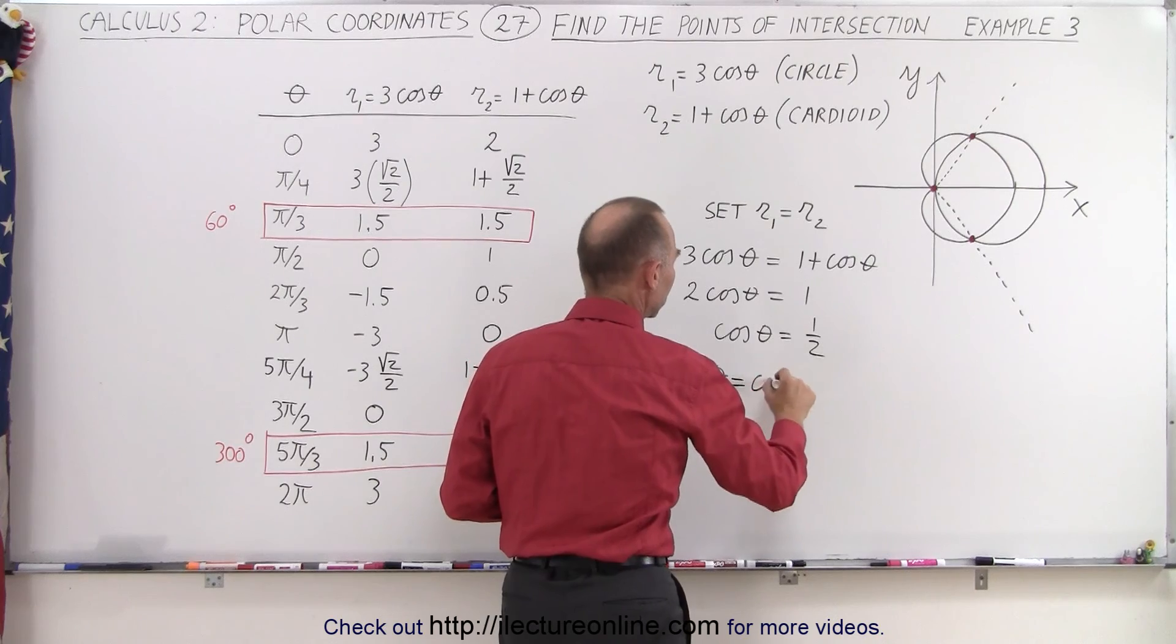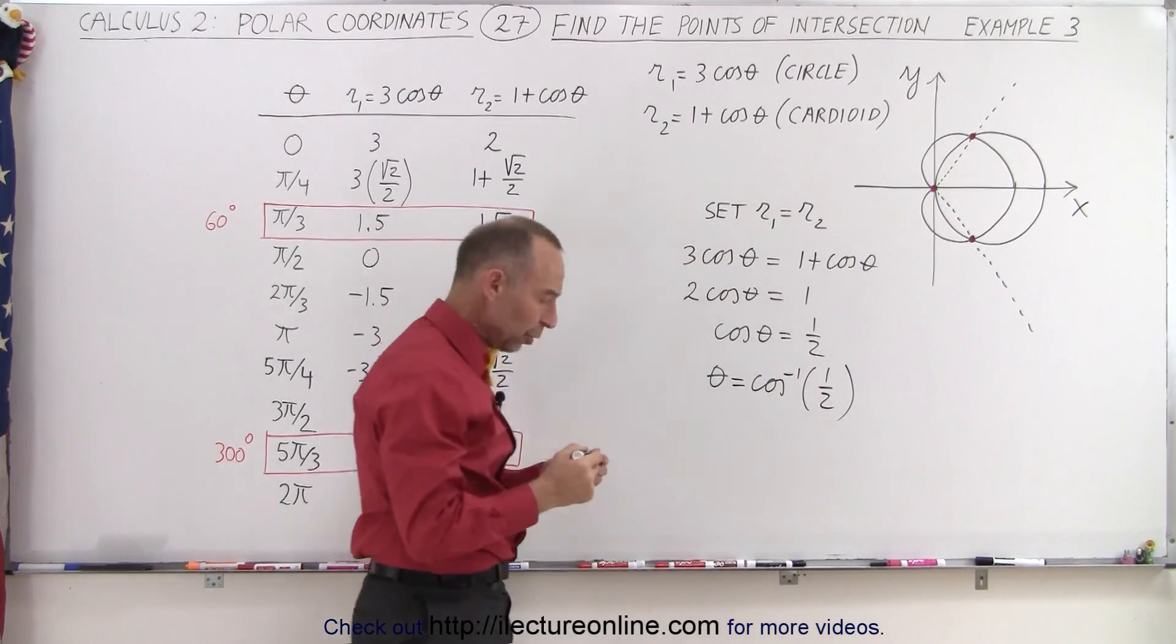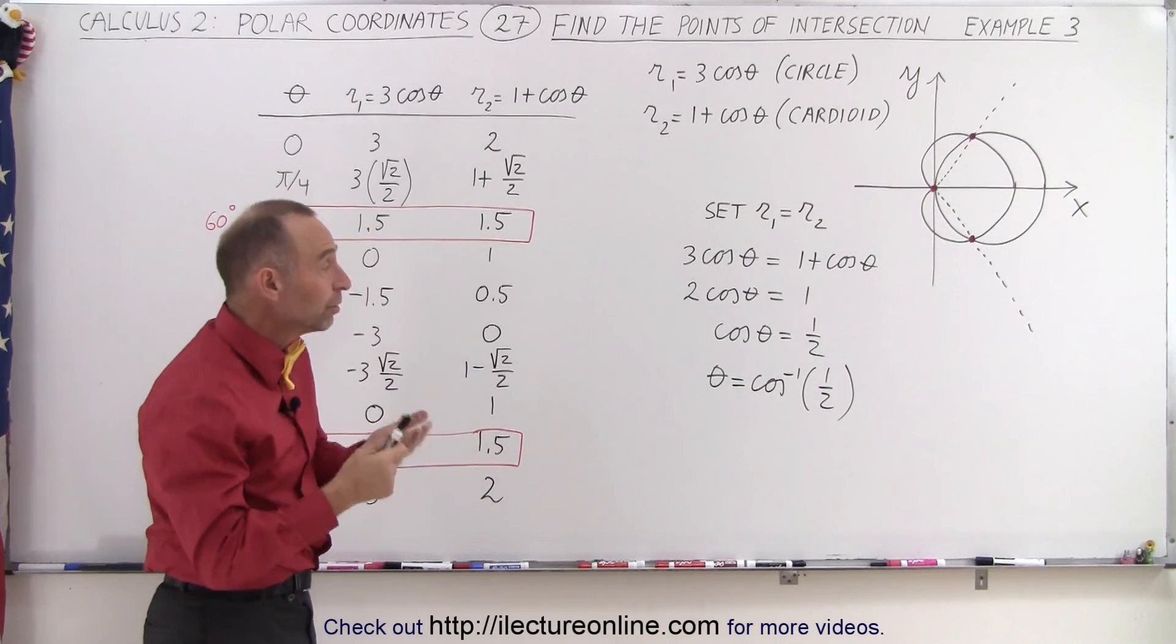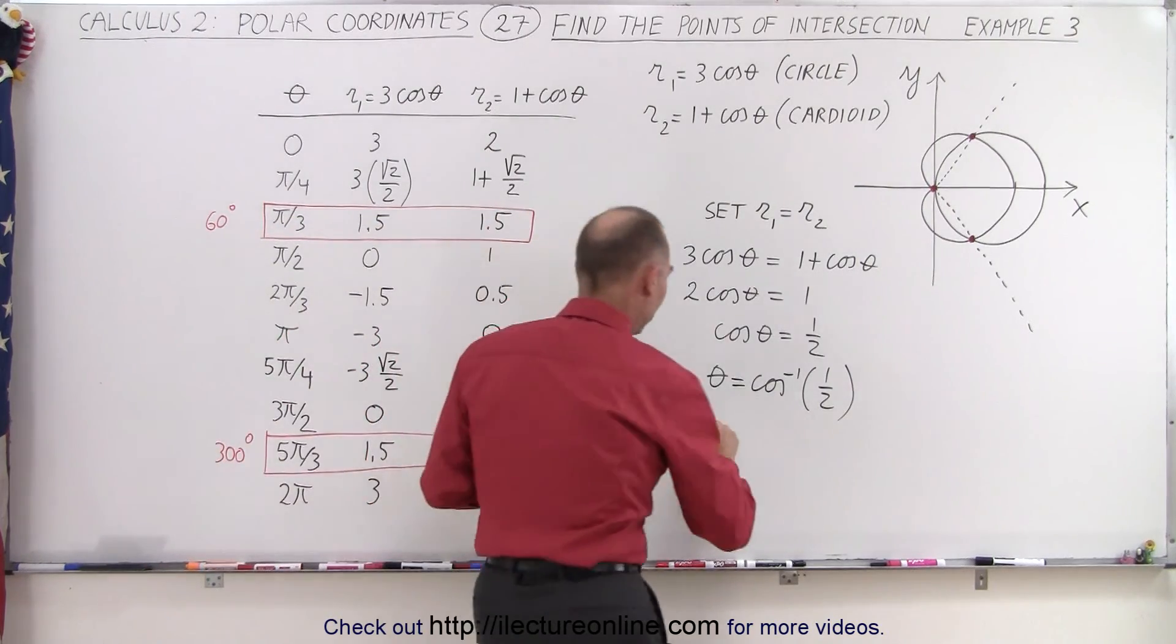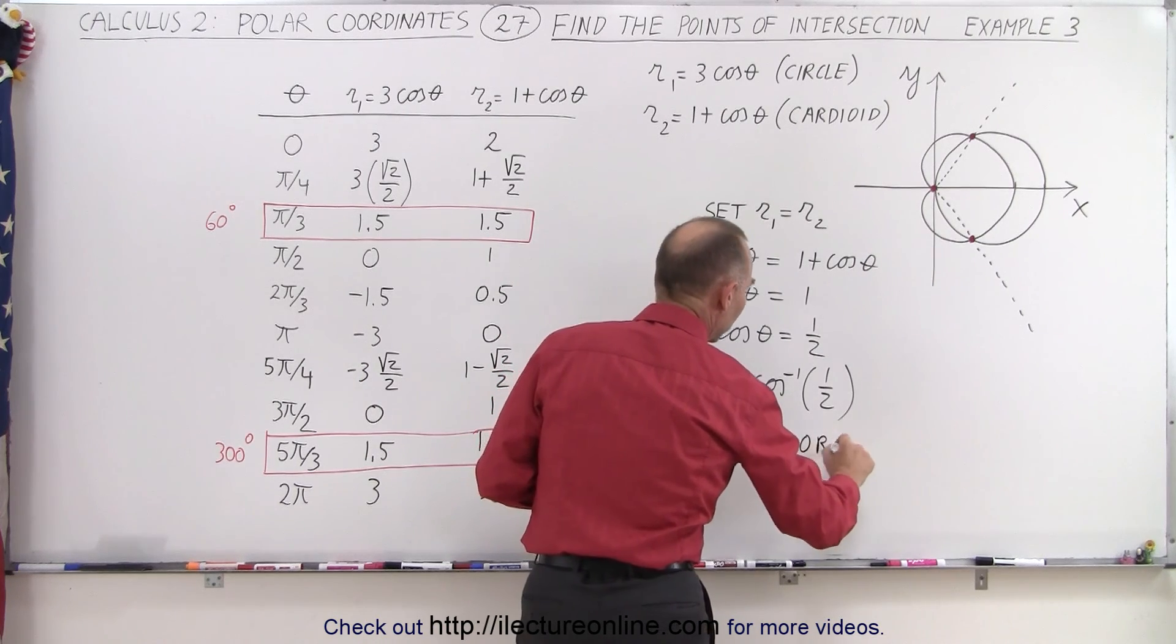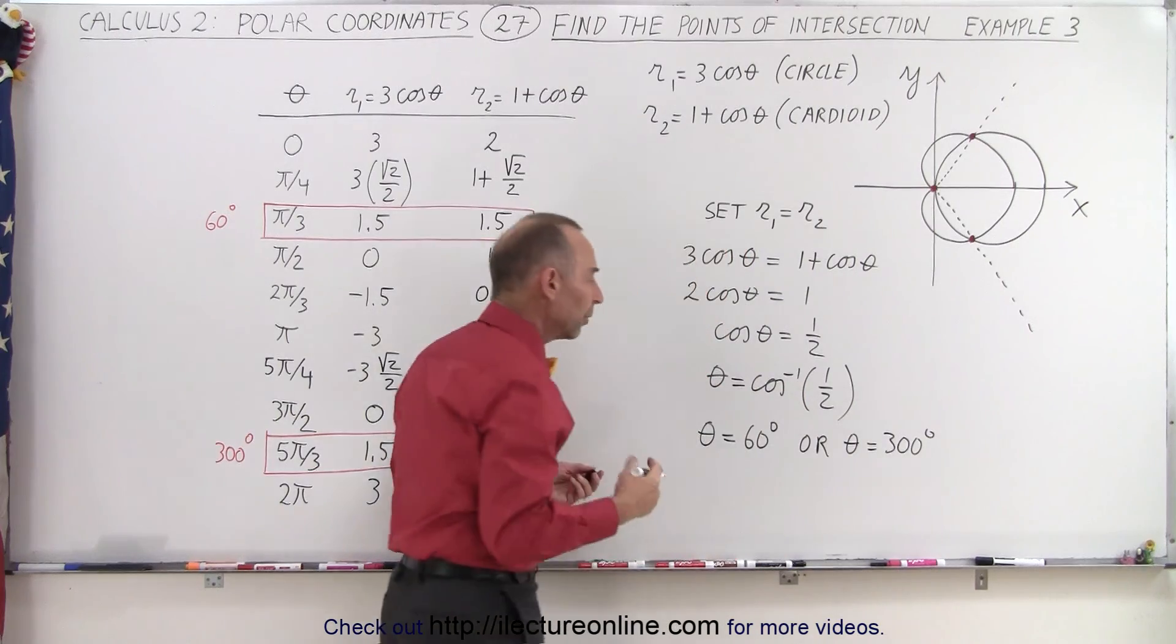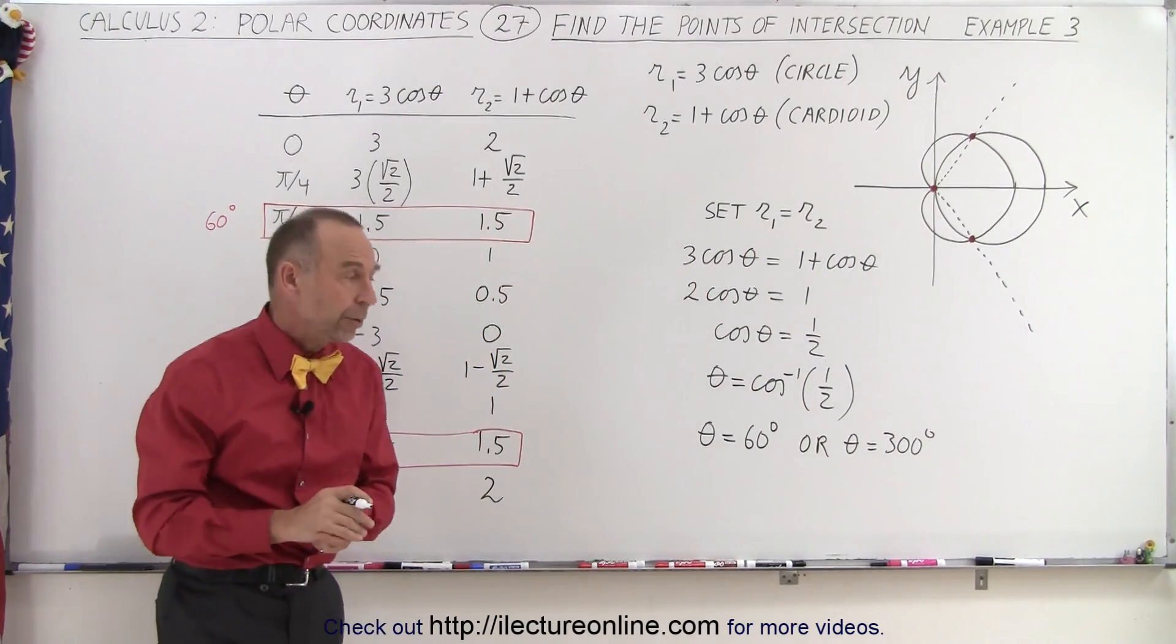Which means that the angle is equal to the inverse cosine of one half. And with the cosine function, that happens at two different locations. We have this when theta is equal to 60 degrees or when theta is equal to 300 degrees. In either case, we get the value for the cosine to be equal to one half.